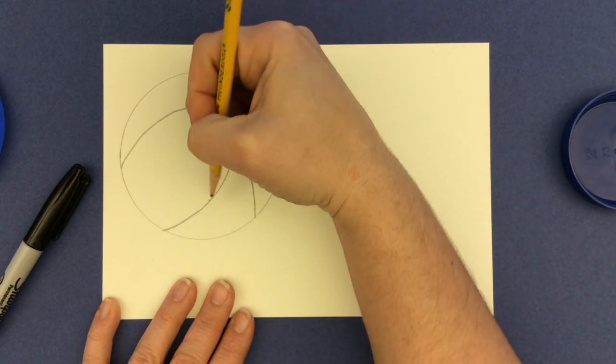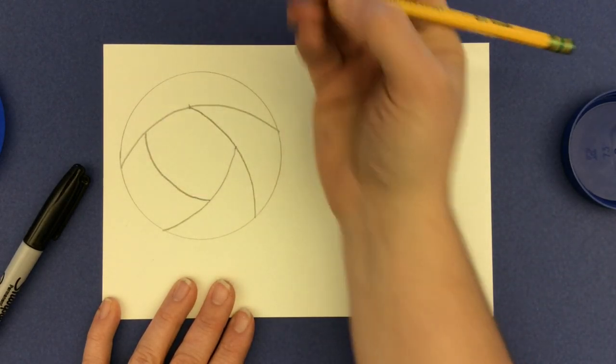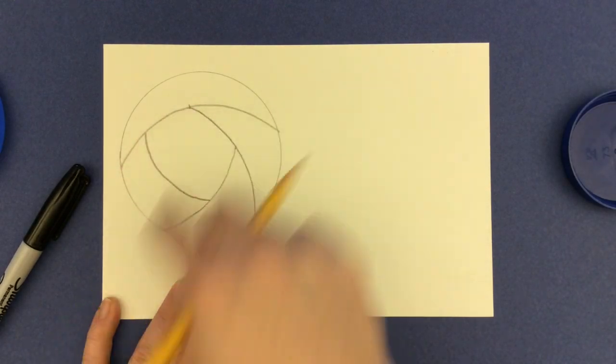Go to the middle again and curve until we run into something. This time it ended up being one of those other curves. That's okay. This is going to get smaller and smaller as we go.